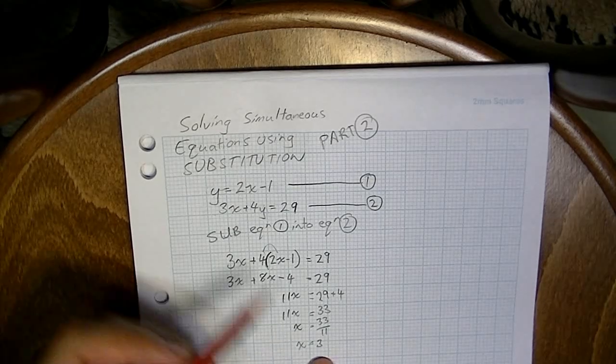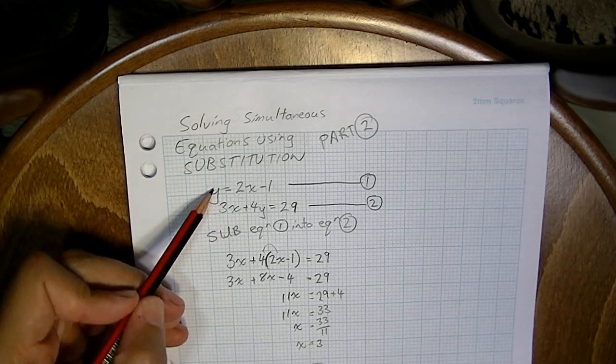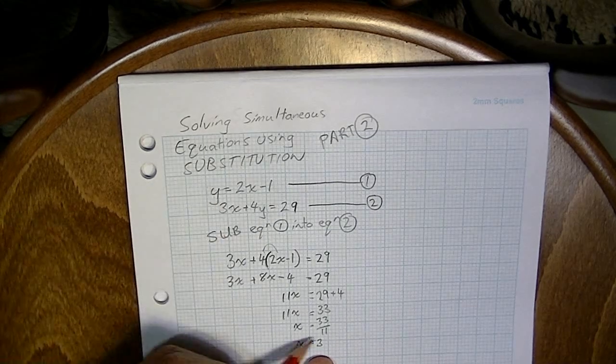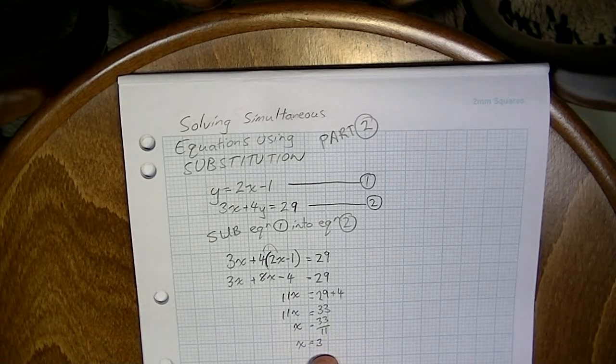Now, remember, we don't have a simultaneous solution yet, because a simultaneous solution is the point at which these two straight lines would meet on a Cartesian plane. We don't have a point yet. We just know that when x equals 3, that's where these things are going to meet.